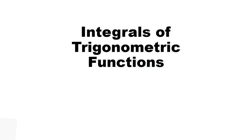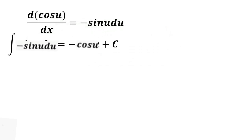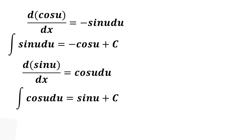The derivative of cosine u is equal to negative sine u du. In reverse, the integral of sine u du is equal to negative cosine u plus c. The derivative of sine u is equal to cosine u du. In reverse, the integral of cosine u du is equal to sine u plus c.